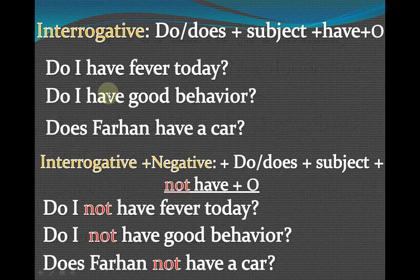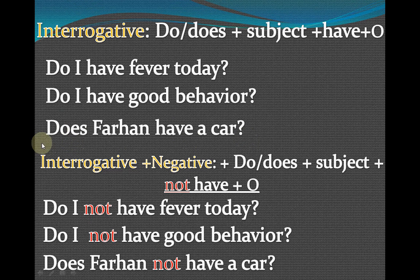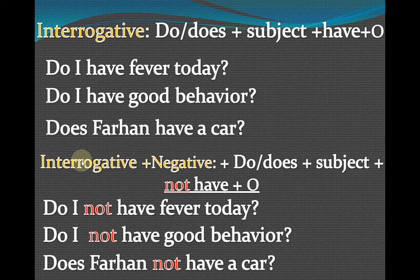Good behavior is showing position and property, and fever is a disease. For example: 'Farhan has a car' — I will clarify why 'has' is used. It means we are talking about Farhan's property. For interrogative plus negative, we place the helping verb first and also add 'not.' The formula is: 'do/does' plus subject plus 'not have' plus object. For example: 'Do I not have fever today?' — we are asking and negating at the same time.